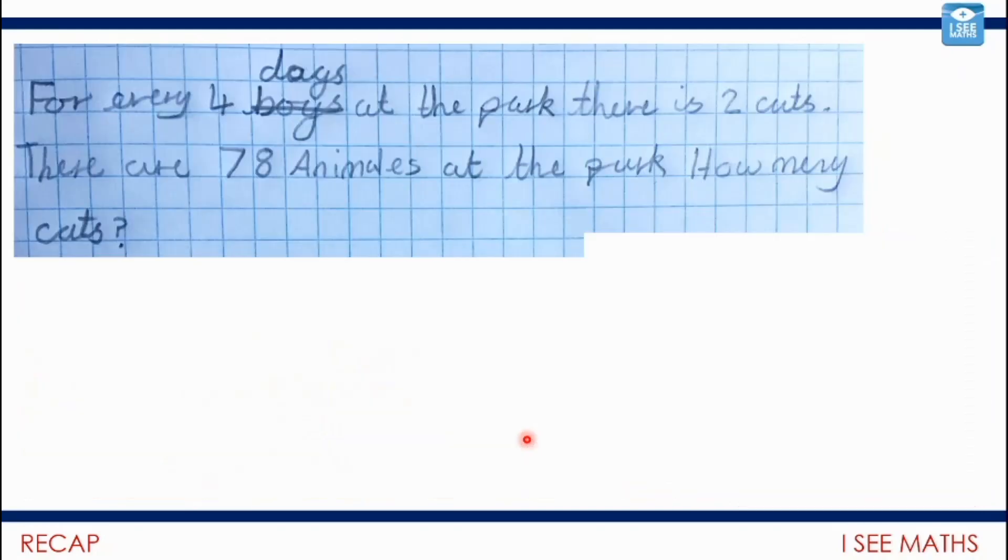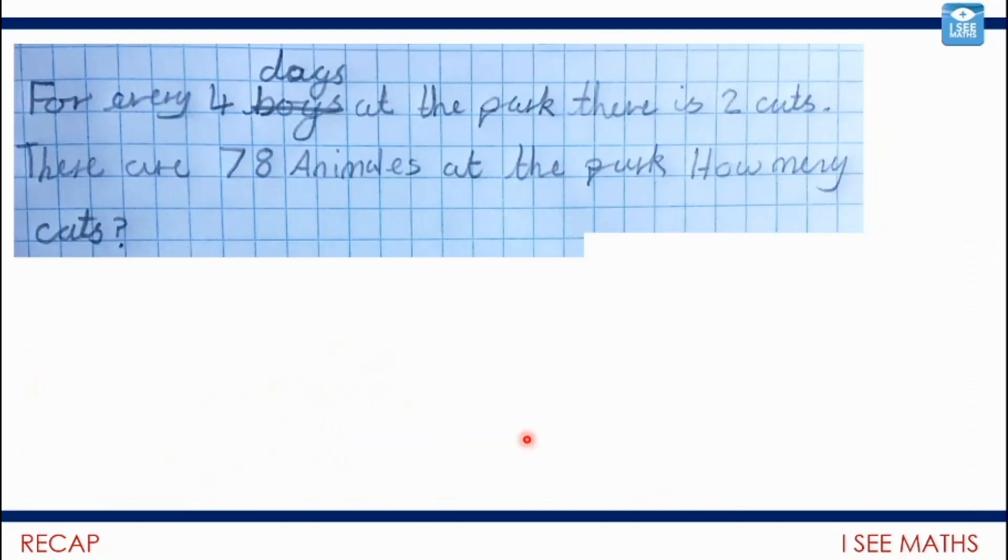And then let's move on to this example. I love this example. It again came through. So for every four dogs at the park, there are two cats. There are 78 animals at the park. How many cats?